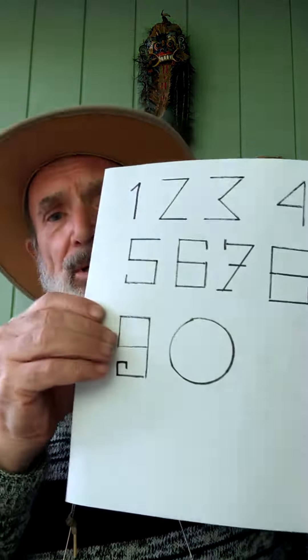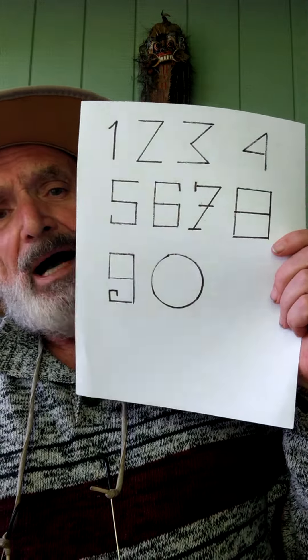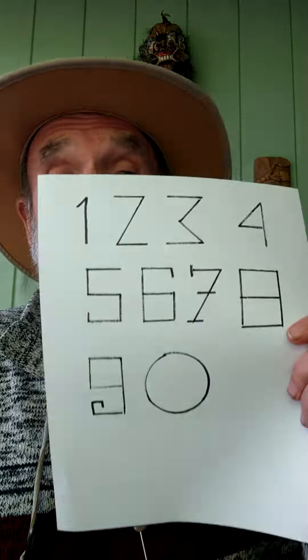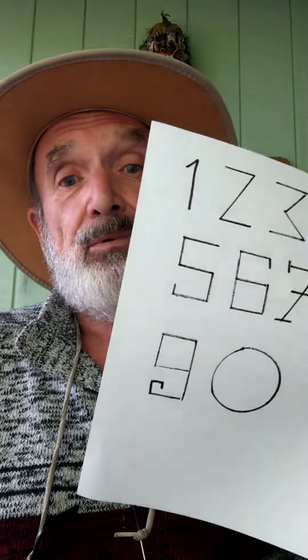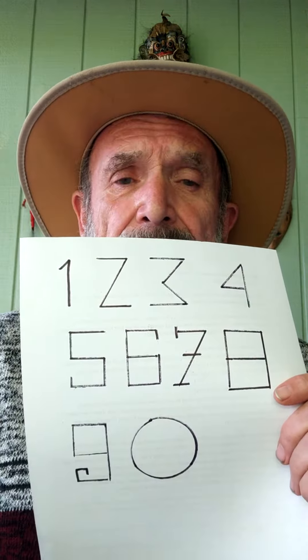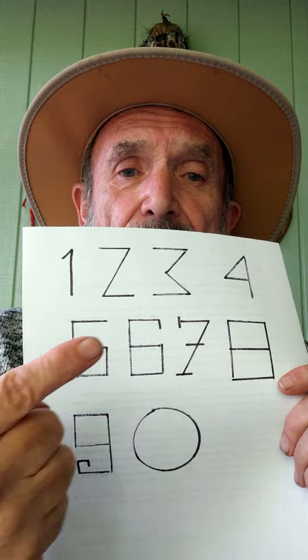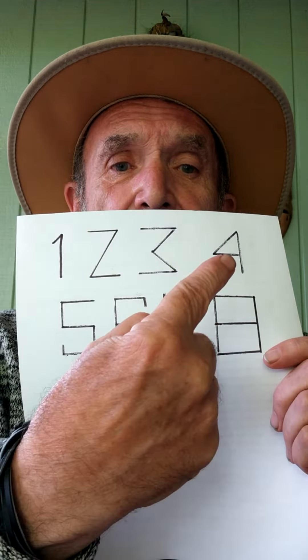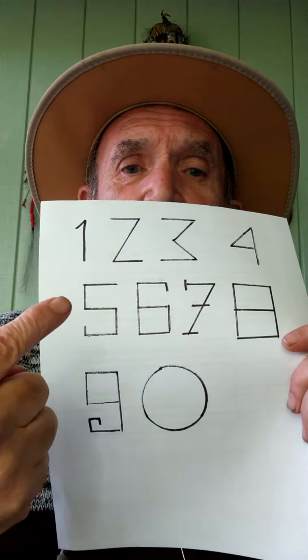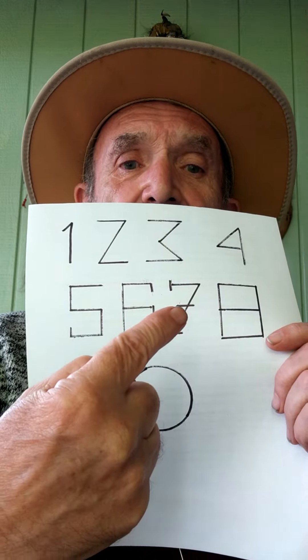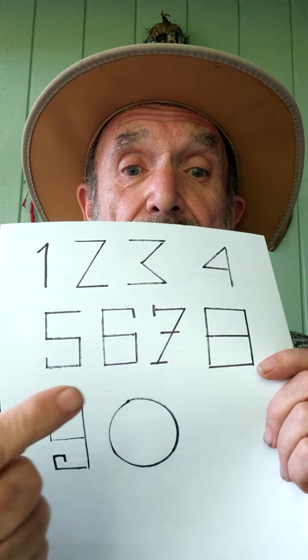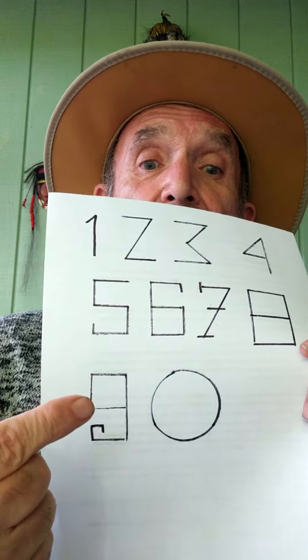But it's a strange thing. If we look at these numbers, they all are based on angles, or at least appear to be based on angles. Like, number one has one angle. Number two has two angles. Number three has three. Four. Five. Six angles. Seven angles, if written in a continental way. And eight angles. And nine angles.